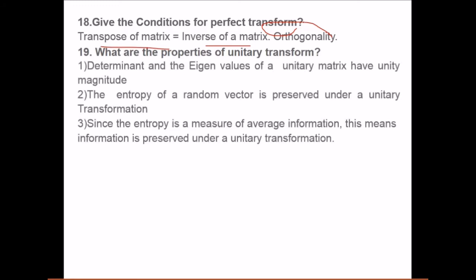What are the properties of unitary transform? Determinant and eigenvalues of a unitary matrix have unity magnitude. That is why it is unitary transform. The entropy of a random vector is preserved under a unitary transform. And since the entropy is a measure of information, this means that the information is preserved under a unitary transformation.